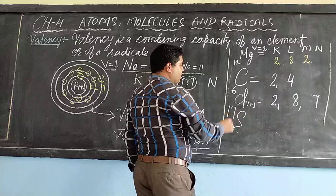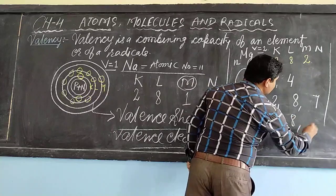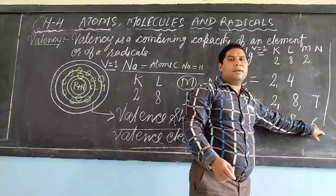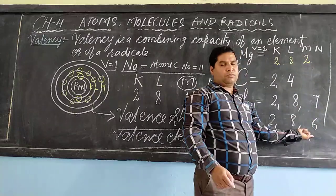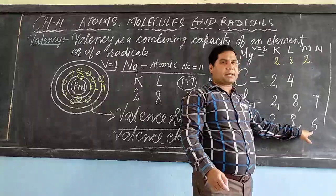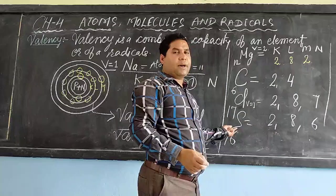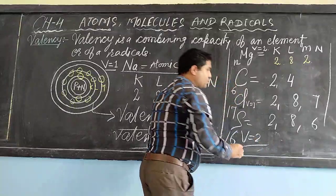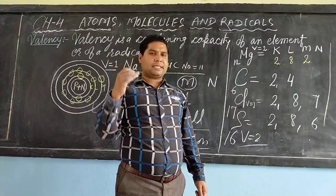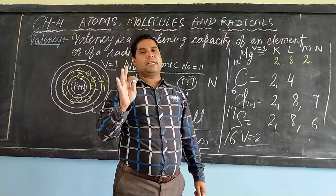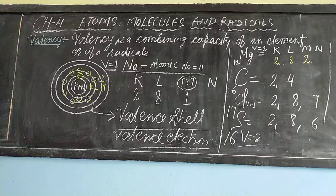One more example — Sulphur, denoted by S, atomic number 16. Electronic configuration: 2, 8, 6. So 6 is the valence electron and M is the valence shell. Since 6 is more than 4, it is subtracted from 8: 8 minus 6 equals 2. So the valency of sulphur is 2. Dear students, I hope that valency, valence electron, valence shell, and how to find the valency of a particular element is now clear to you. Thank you.